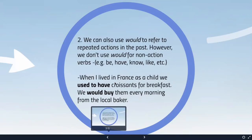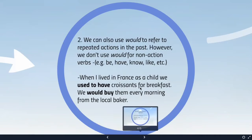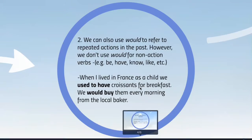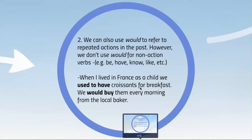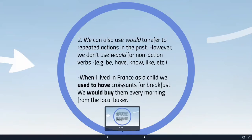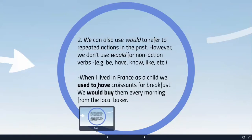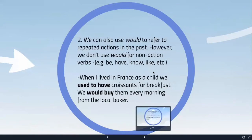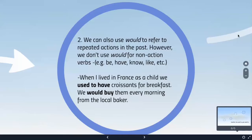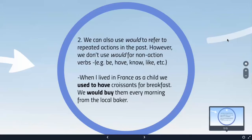For example: 'When I lived in France in the past, as a child, we used to have croissants for breakfast.' I cannot say 'I would have,' because if I say 'I would have,' it talks about something that is a supposition — I am giving something that is not true.